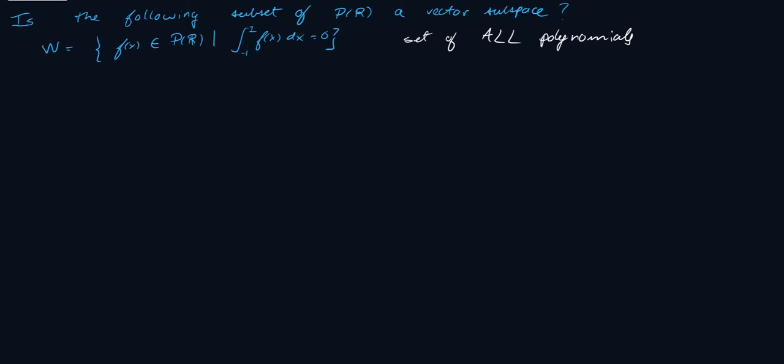Hello again, everyone. In this video we'll be doing another vector subspace proof. The proof is to show that the following subset of P(R) is a vector subspace. P(R), remember, is the set of all polynomials — there's no restriction on degree — it's just all polynomials. So is the following subset of P(R) a vector space?